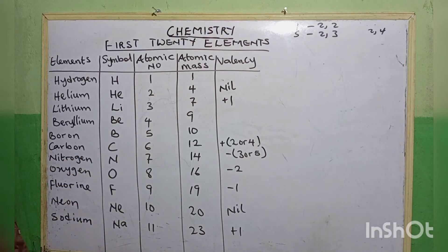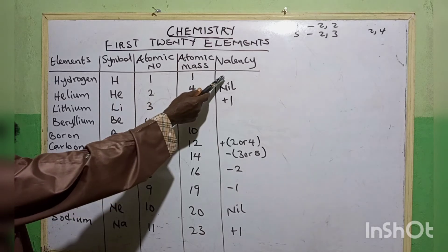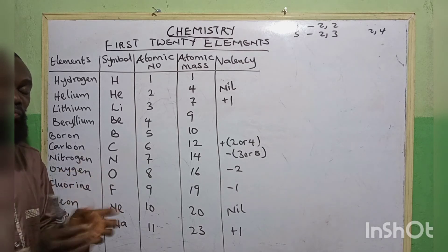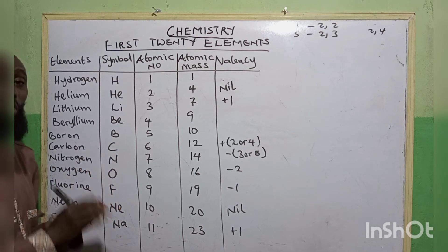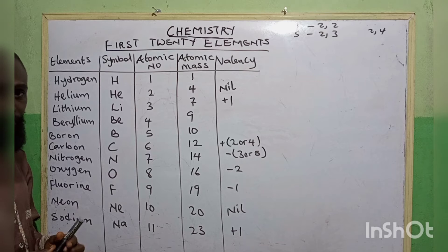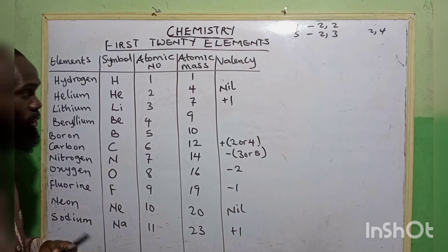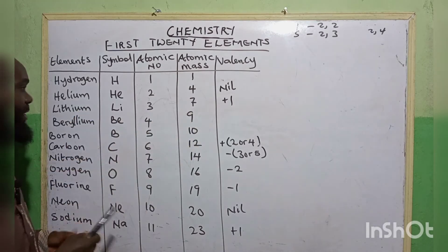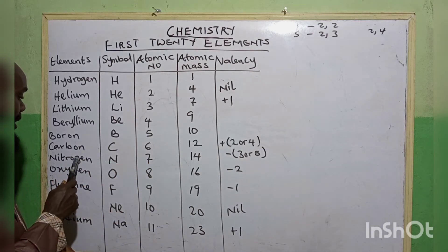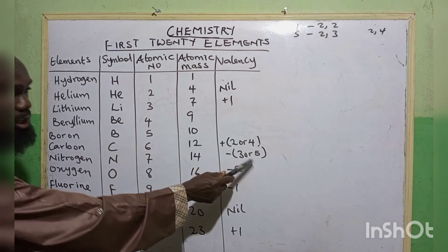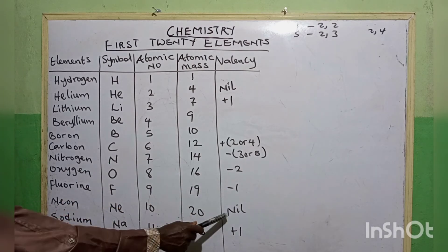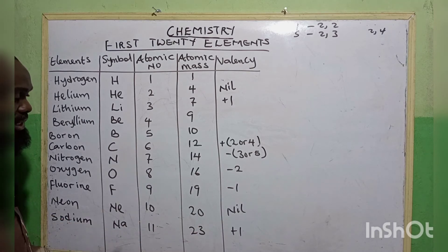From here: hydrogen has no single valency written, because hydrogen can have two different valencies in different compounds — it can be plus one, or it can be minus one, depending on where it occurs. When it occurs in a hydride, it has minus one. Helium has no valency. Lithium has a valency of plus one. Carbon has two valencies: plus two or plus four. Nitrogen has two valencies: minus three or minus five. Oxygen has a valency of minus two. Fluorine is minus one. Neon has no valency. Sodium has a valency of plus one.